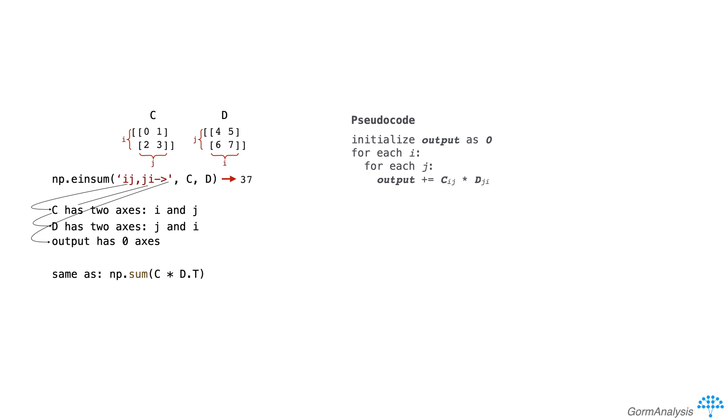More importantly though, sum(c * d.T) creates a temporary array that takes up memory before it gets summed into a scalar. EinSum avoids this memory consumption, which if you're dealing with big arrays can make a significant difference.